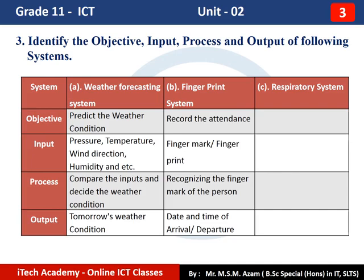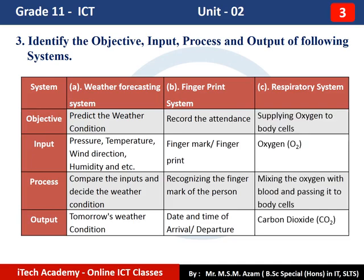System Number 3: Respiratory system. The objective is to supply oxygen to body cells. The input to the respiratory system is oxygen (O2). The respiratory system will mix the oxygen with blood and pass it to the body cells — that is the process. Finally, it produces the output, which is carbon dioxide (CO2).